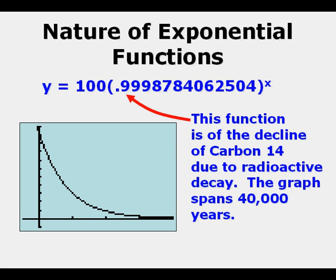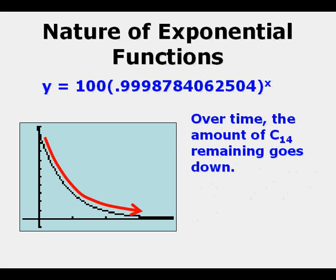This function is of the decline of carbon-14 due to radioactive decay. The graph spans 40,000 years. Over time, the amount of carbon-14 remaining goes down. As it decays, it changes back into nitrogen. And so that's very useful.